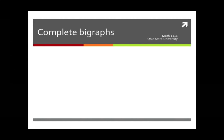What we're going to do here is to look at a special class of graphs so as to understand some of the things that we've learned about Euler circuits and Hamilton circuits. These are called complete bi-graphs.